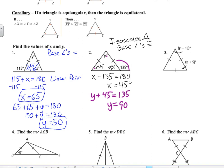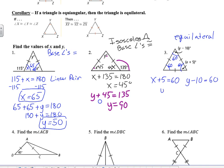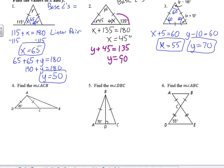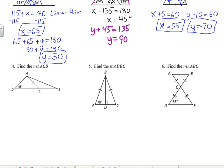For example 3, notice the three tick marks — this is equilateral. If it's equilateral it's equiangular, so all angles equal 60°. Setting up equations: x + 5 = 60, so x = 55; and y − 10 = 60, so y = 70. We're just using what we know — recognizing and applying the properties, along with tools like linear pairs and vertical angles.